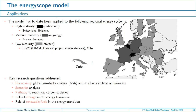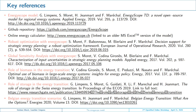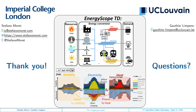Energy Scope is suited for three kinds of applications: uncertainty quantification, because the model is very fast and allows many evaluations; scenario analysis, to assess different CO2 emission constraints and figure out the best pathway to a low-carbon energy system; and technical studies to better understand the role of storage, renewable fuels, and how to integrate high shares of intermittent renewable energies. Thank you for your attention — if you have any questions, feel free to contact us.